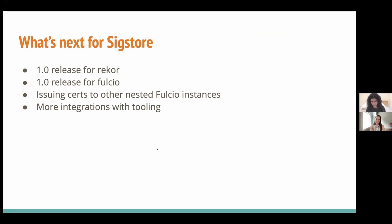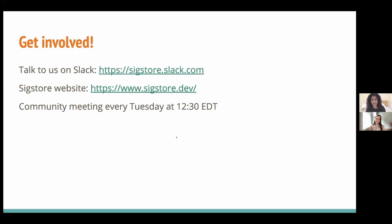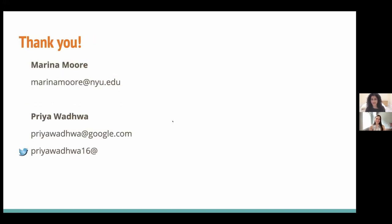Some future steps for SIGSTOR: Cosign already had its 1.0 release, but REKOR and Fulcio releases are still upcoming and coming up pretty soon. Other upcoming work includes issuing certs to nested Fulcio instances so you can have a local instance of Fulcio based on the same root of trust, as well as integrations with more tooling in the secure software supply chain space. If you'd like to get involved, there's a website and Slack — it's a super open and welcoming community. Feel free to come with questions or ideas, and there's a weekly community meeting you can find info on from the website.